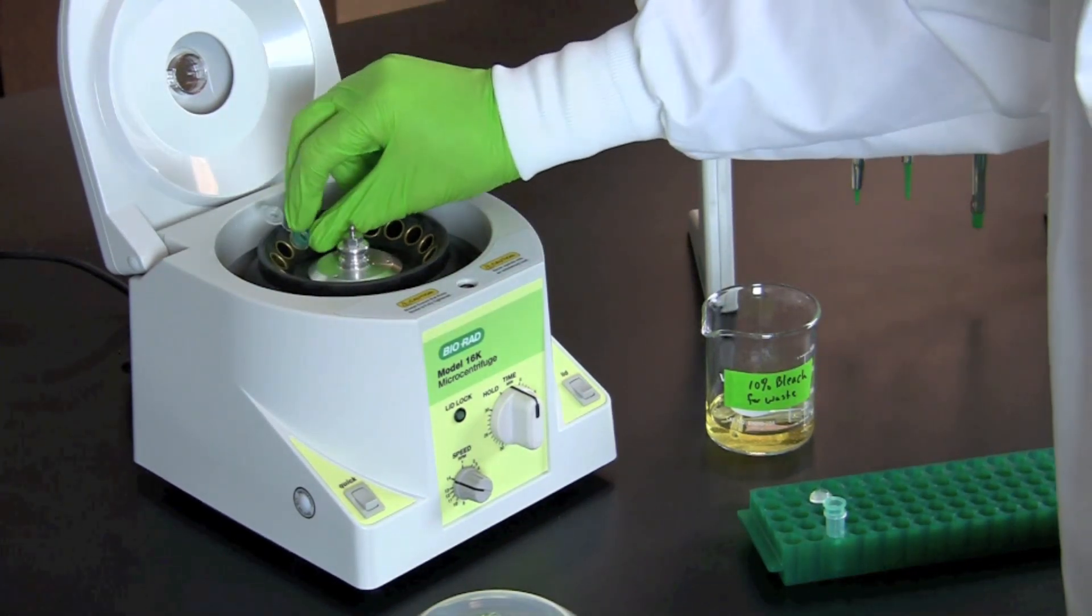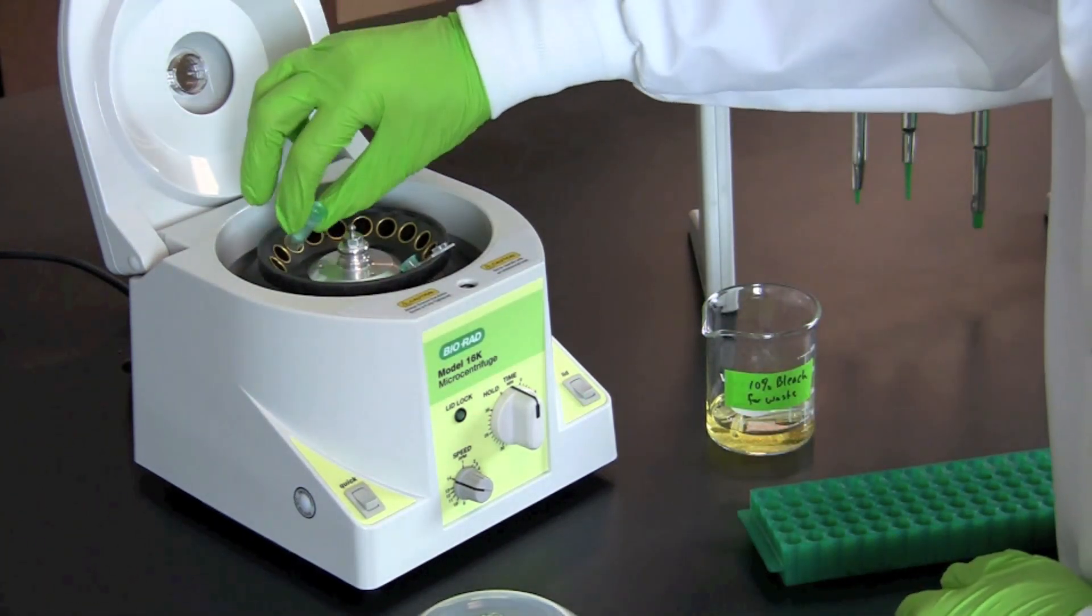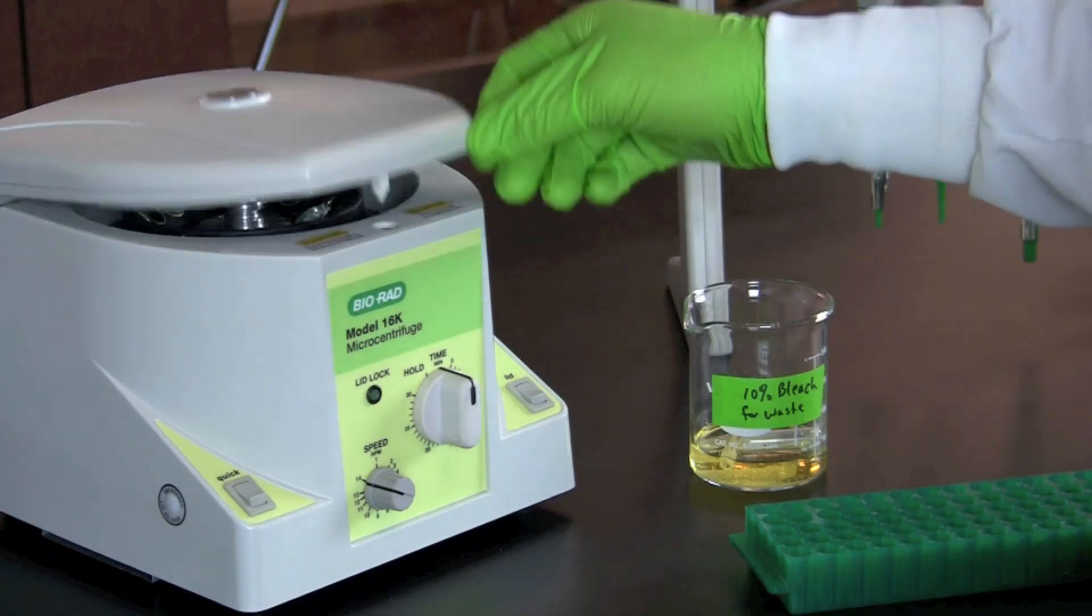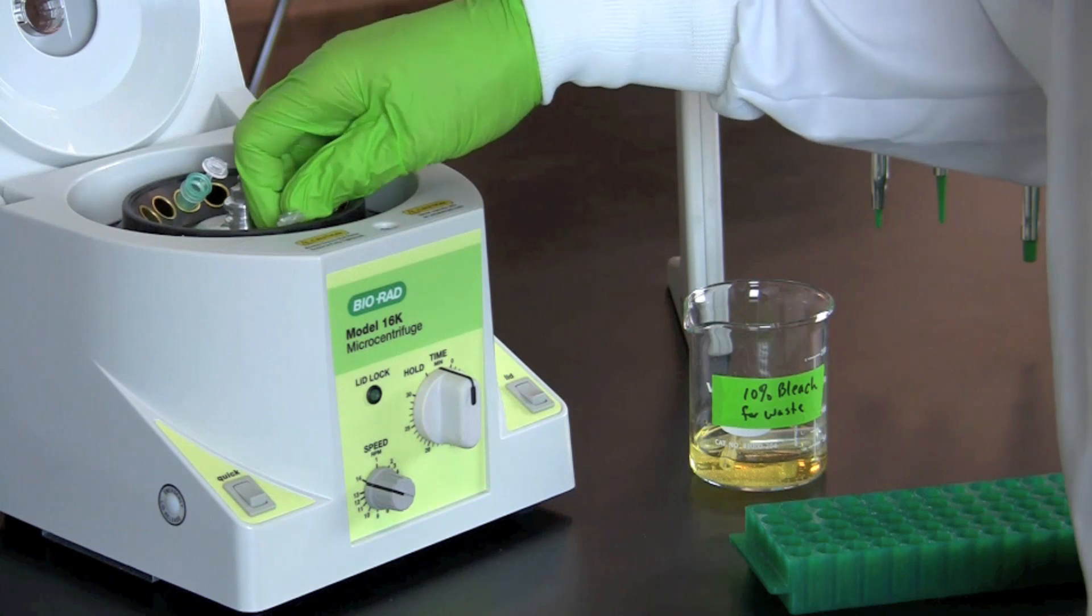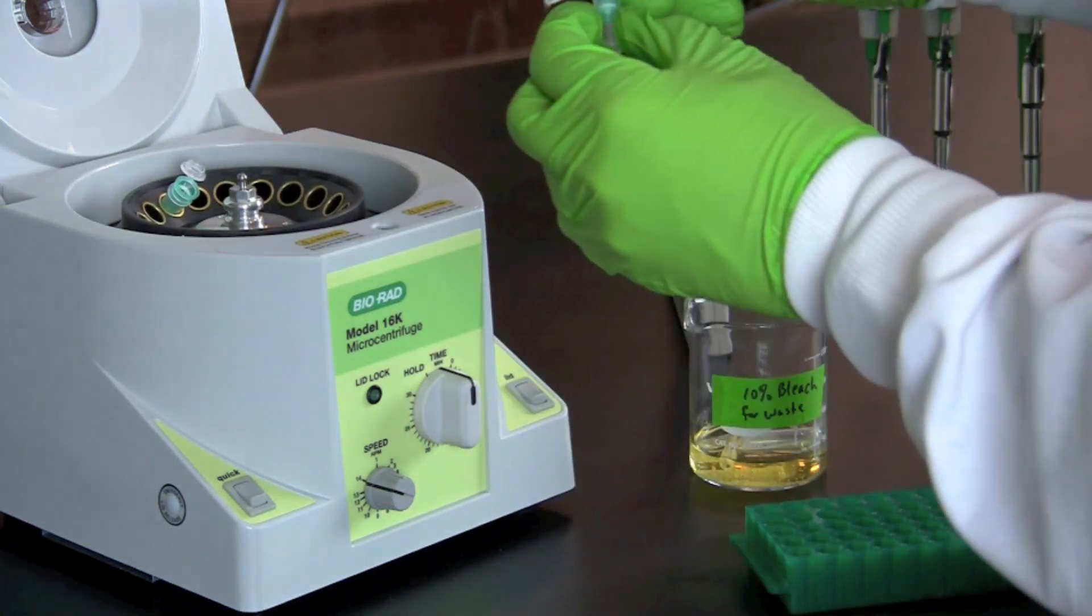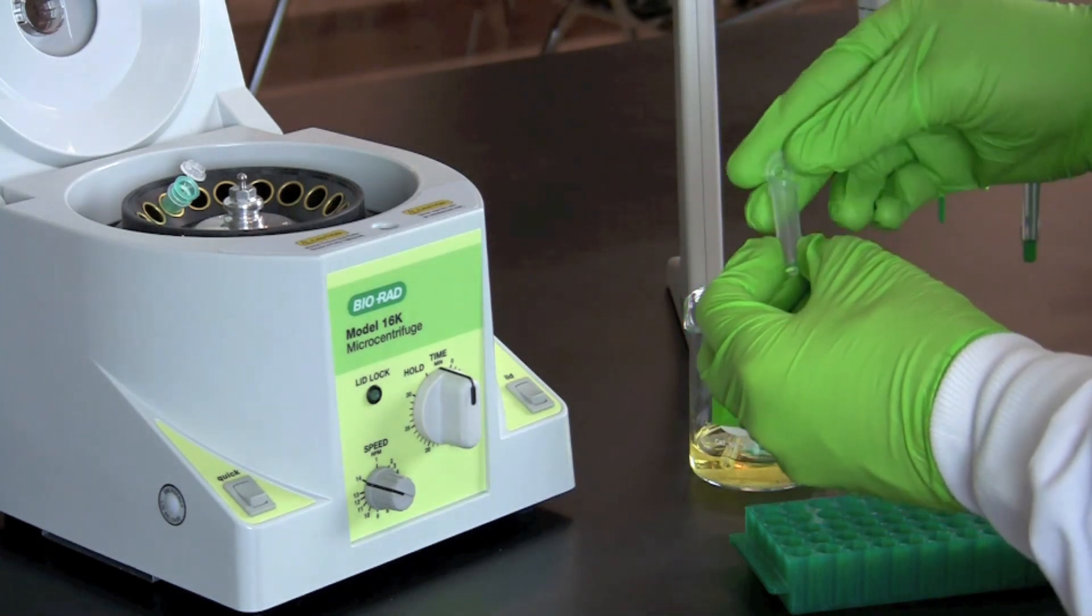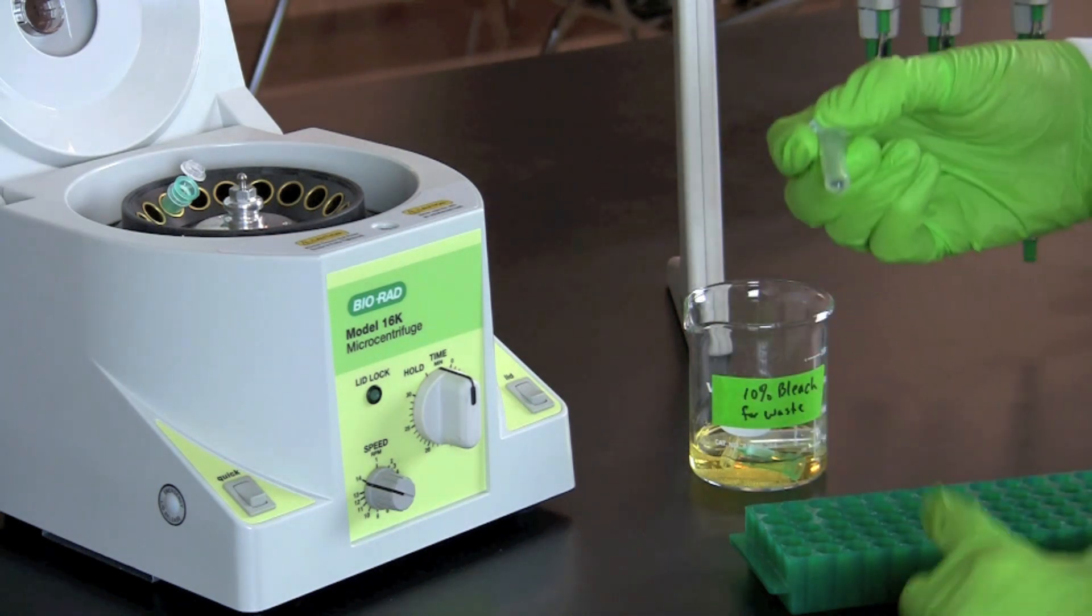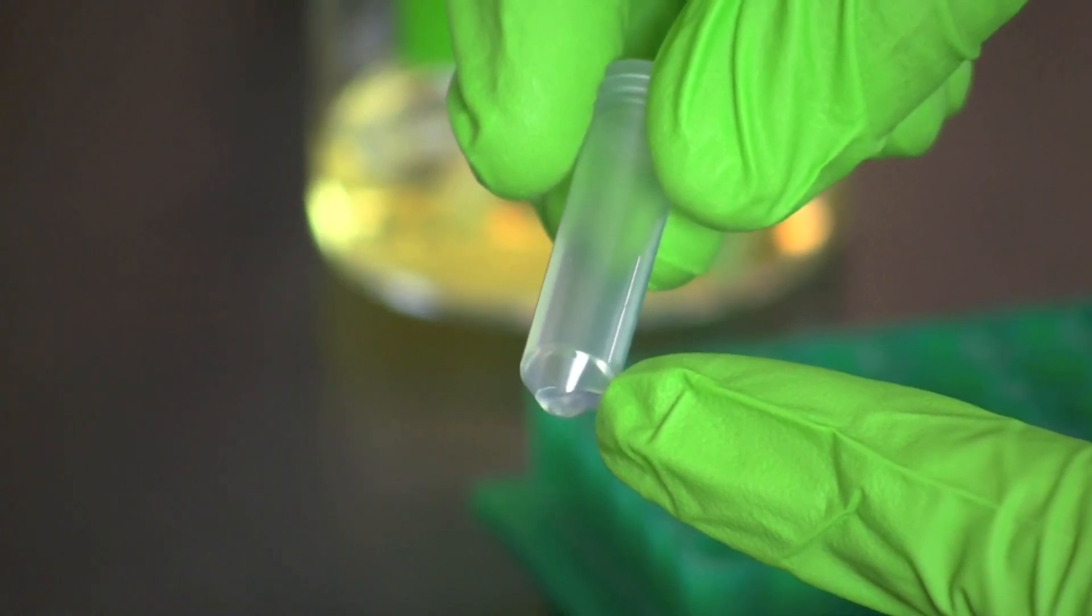Spin the columns in the clean microcentrifuge tubes for one minute at top speed. Since the caps are not closed, the microcentrifuge may need to be run without closing the inner lid. Discard the columns and close the caps on the microcentrifuge tubes. The purified DNA is ready to use or can be stored at 4 degrees Celsius.